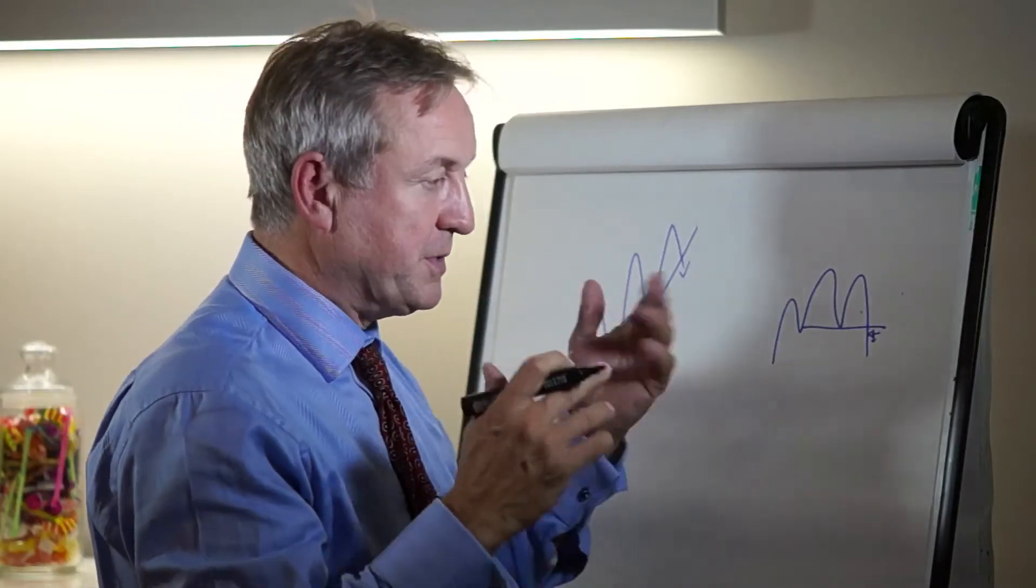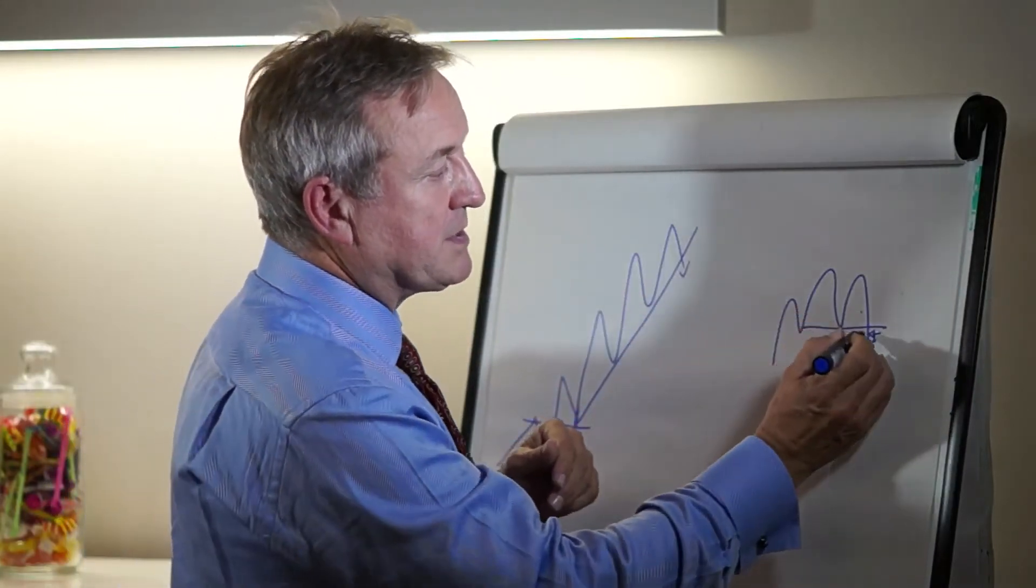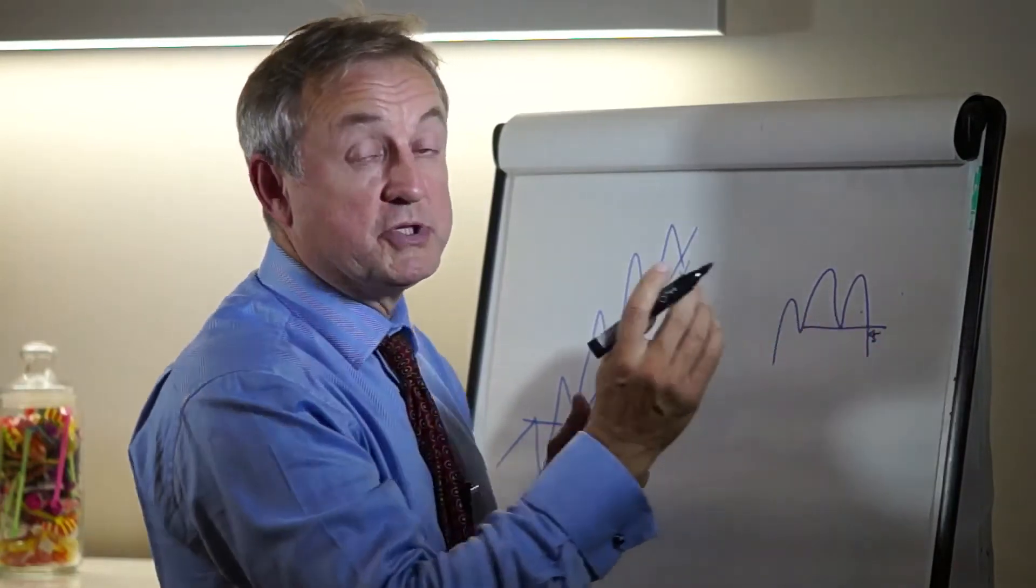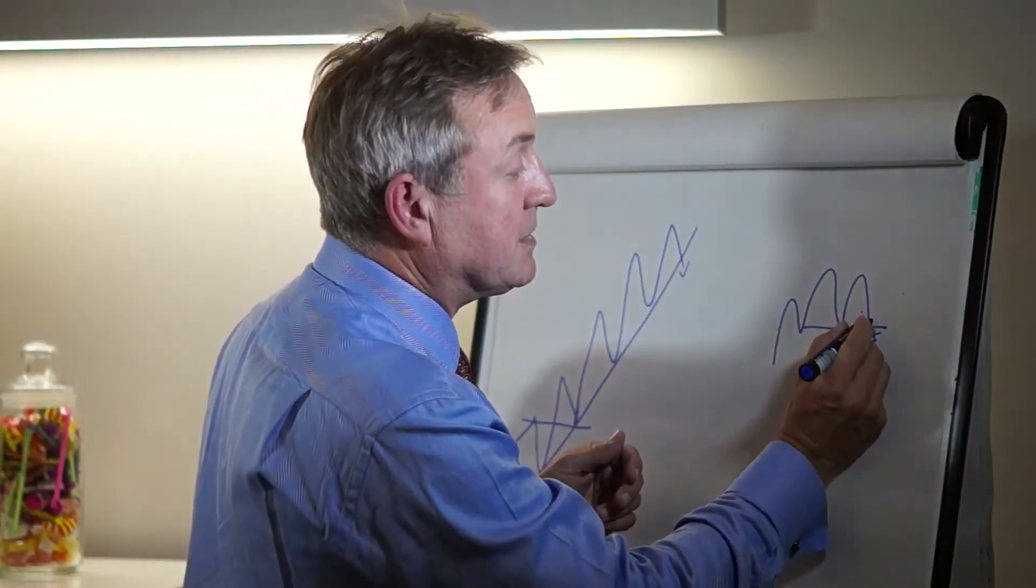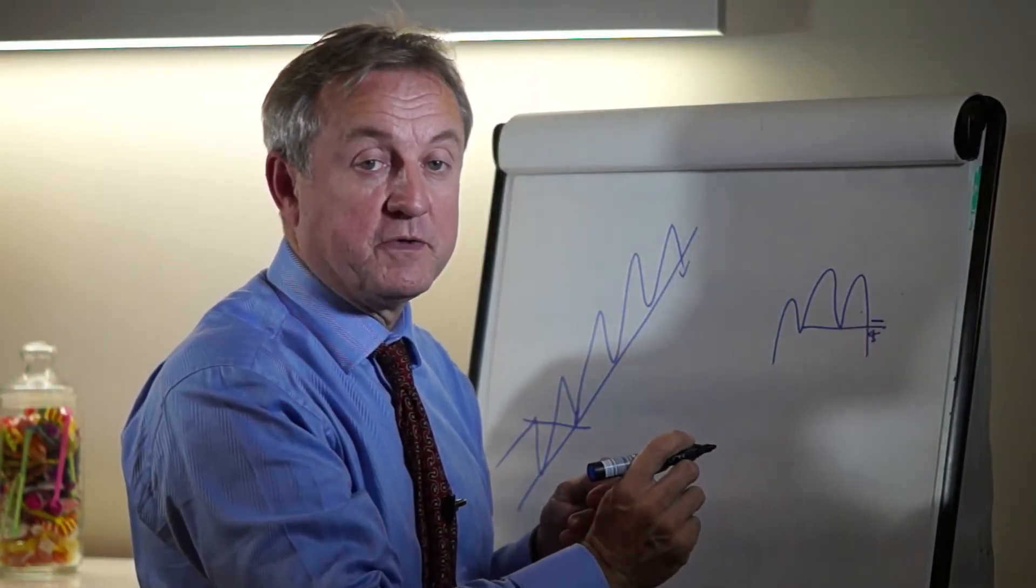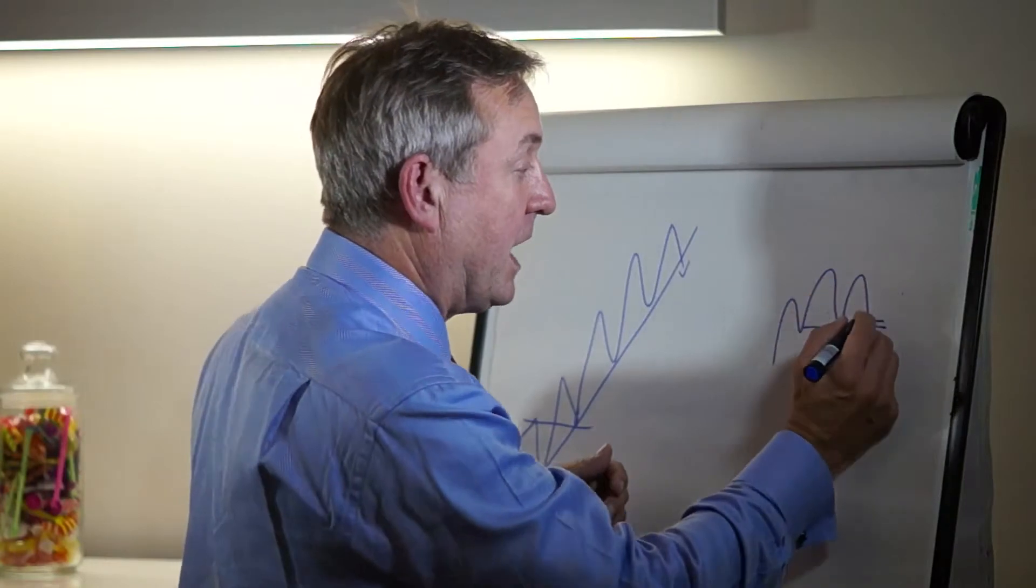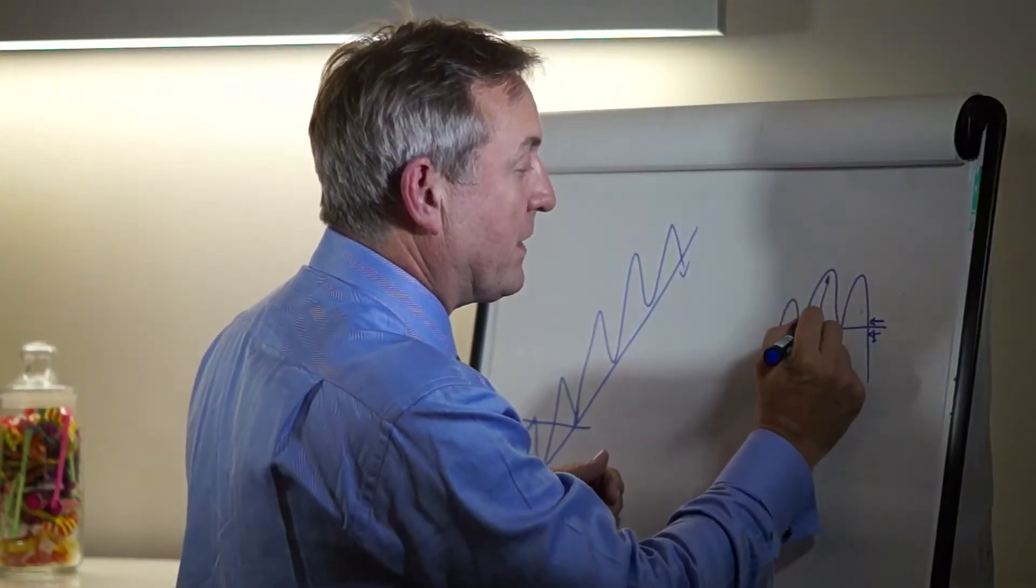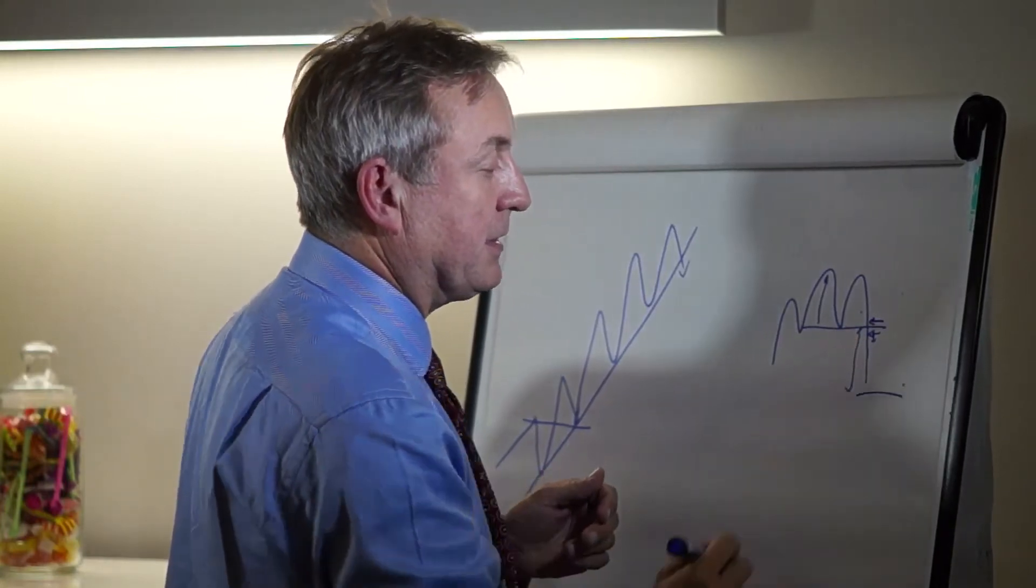When we enter the trade, logical risk control is to cut the trade if the completion of the pattern is negated by a move up, and to take profit when the target is reached down here.